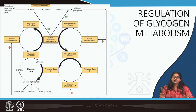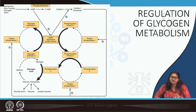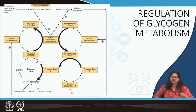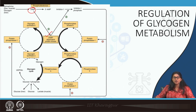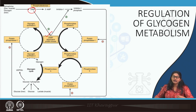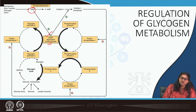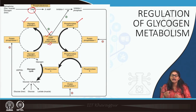These two pathways cannot be activated under the same conditions. When the body needs energy, there is low glucose in circulation, sensed by epinephrine or glucagon. These hormones form cyclic AMP, which activates cyclic AMP-dependent protein kinase. This protein kinase activates glycogen breakdown by phosphorylation while simultaneously inactivating glycogen synthase by phosphorylation. The net result is glycogen breakdown.